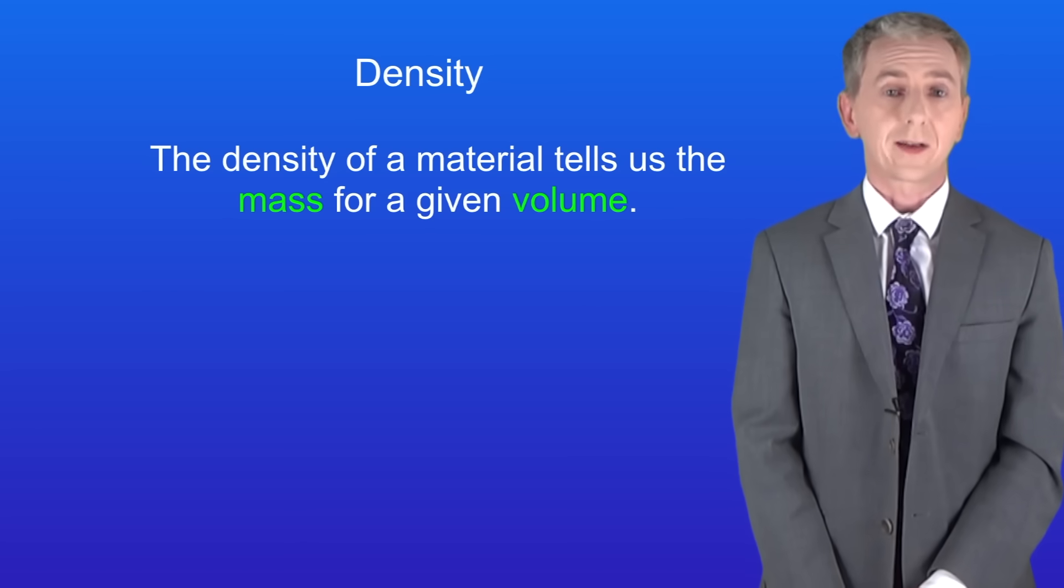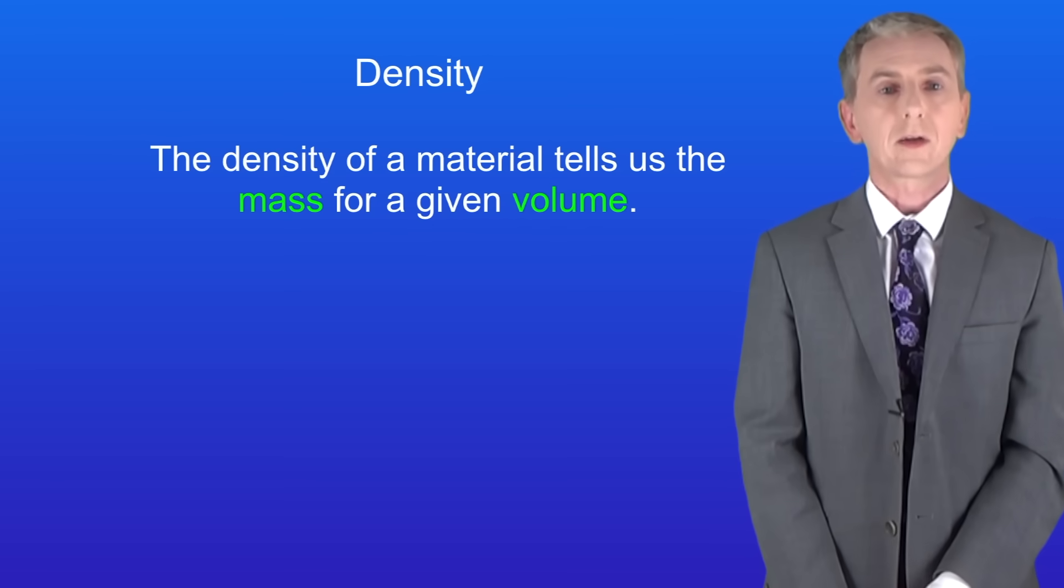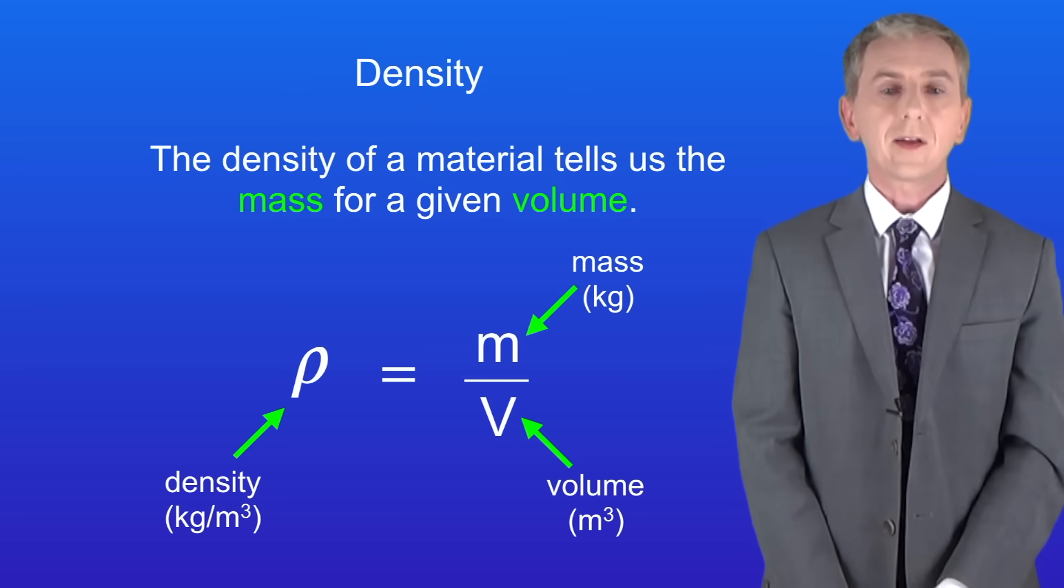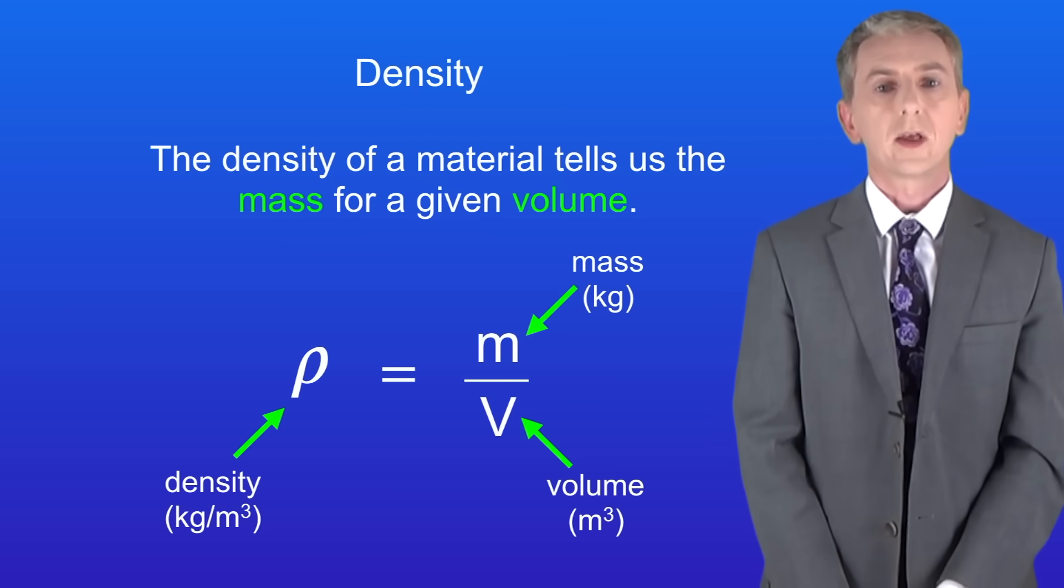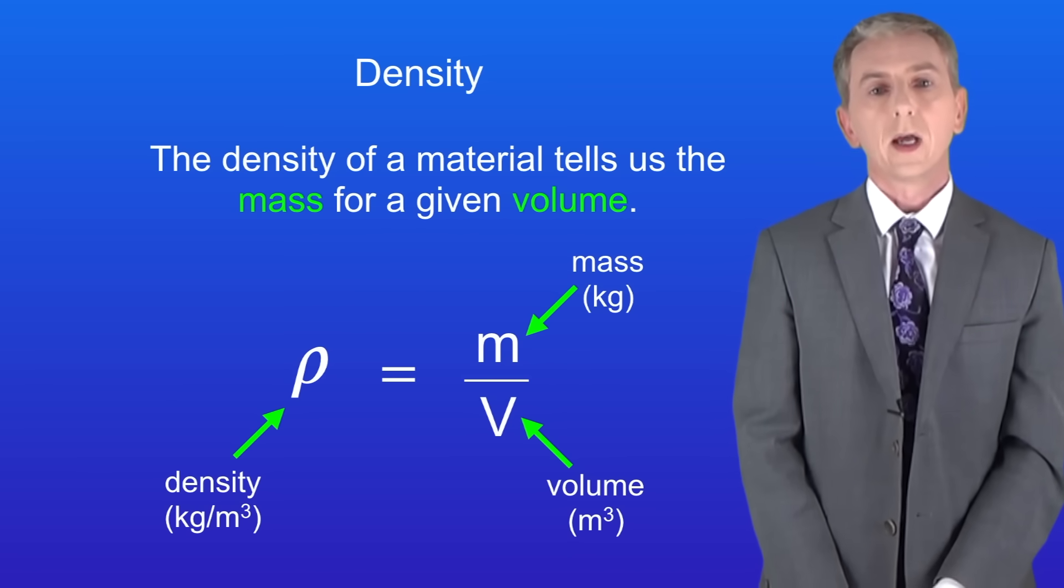In the last video we looked at density and we saw that the density of material tells us the mass for a given volume. We calculate density using this equation. The density equals the mass in kilograms divided by the volume in meters cubed. The unit of density is kilograms per meter cubed and remember that you're not given this equation in the exam.